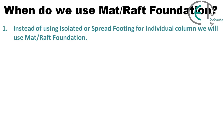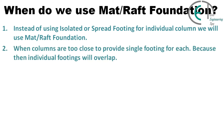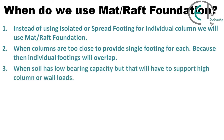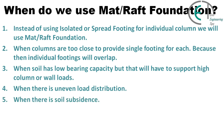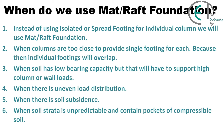When do we choose mat or raft foundation? Instead of using isolated or spread footing over individual columns, we use mat or raft foundation when: columns are too close to provide a single footing for each, because individual footings would overlap; when soil has low bearing capacity but must support high column or wall loads; when there is uneven load distribution; when there is soil subsidence; or when soil strata is unpredictable and contains pockets of compressible soil.